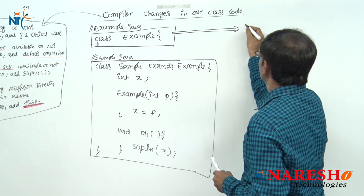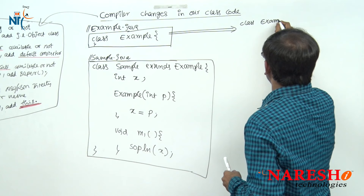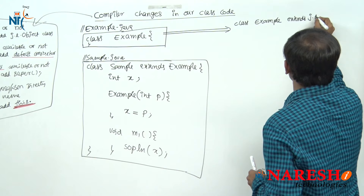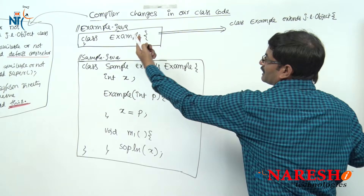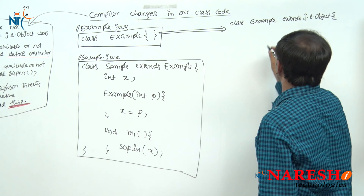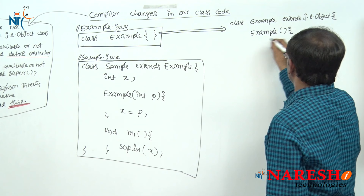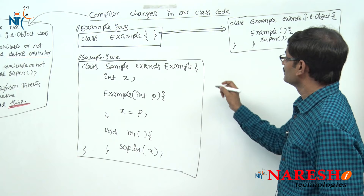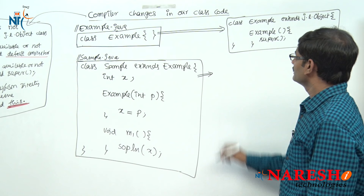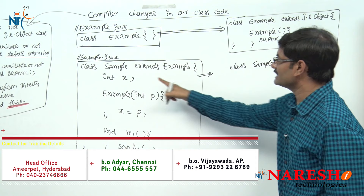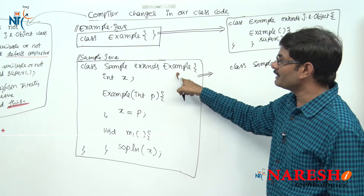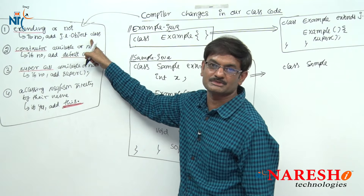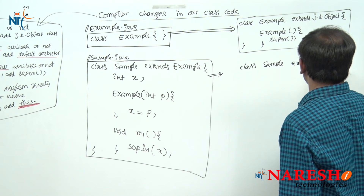First I compile example.java. The Example class is not extending from any class, so compiler adds extends java.lang.Object. Inside Example class there is no constructor — it is an empty class. So compiler adds a default constructor with super(). This is the first class. Now if I compile Sample class — is Sample extending from Example already? Yes. So compiler does not add extends.